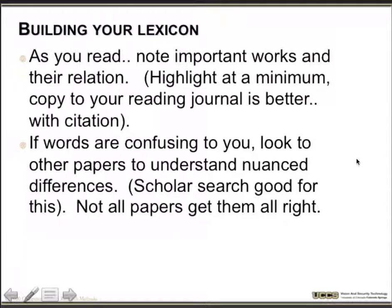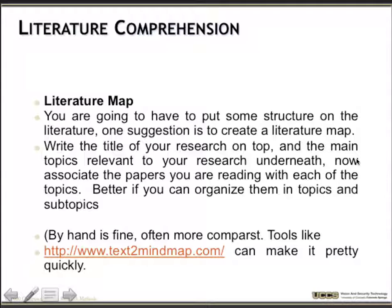The last thing I want to talk about is literature maps, which are a variation of what's called mind mapping. The idea is to put some structure on the literature that connects the papers — write the title of your research and the main topics, then find a way to organize them. You can do this on regular paper, with sticky notes, or with tools like text2mindmap.com, which can make them quickly. When I was starting in the field doing my first couple of survey-related papers, this was something we did, and some of my early PhD students had five or six pages of these things to figure out how to connect them.